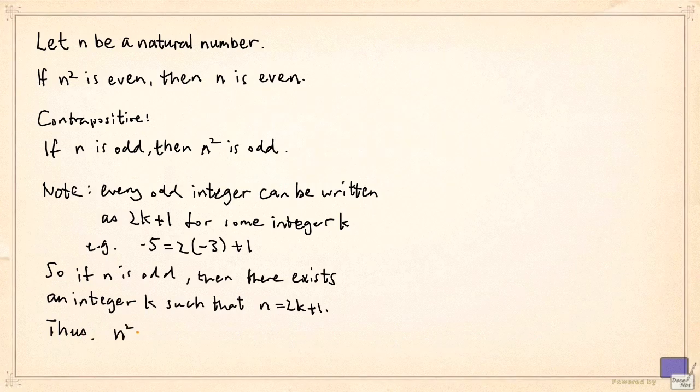Therefore, n squared is simply 2k plus 1 squared, and expanding this, we get 4k squared plus 4k plus 1.